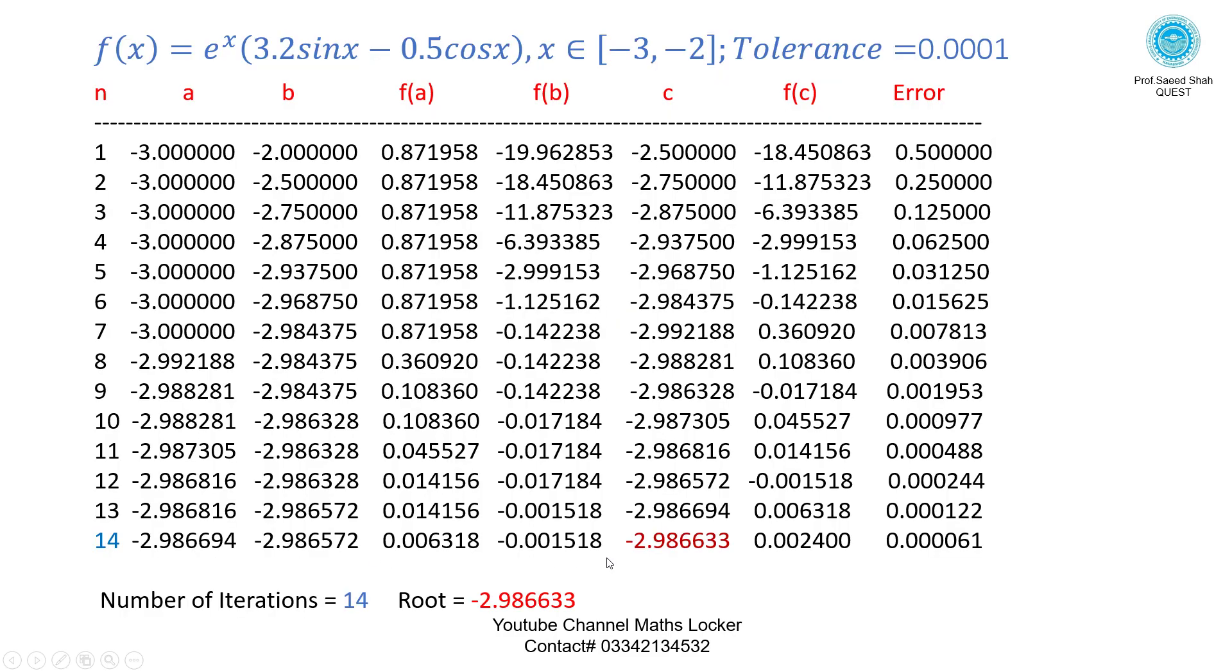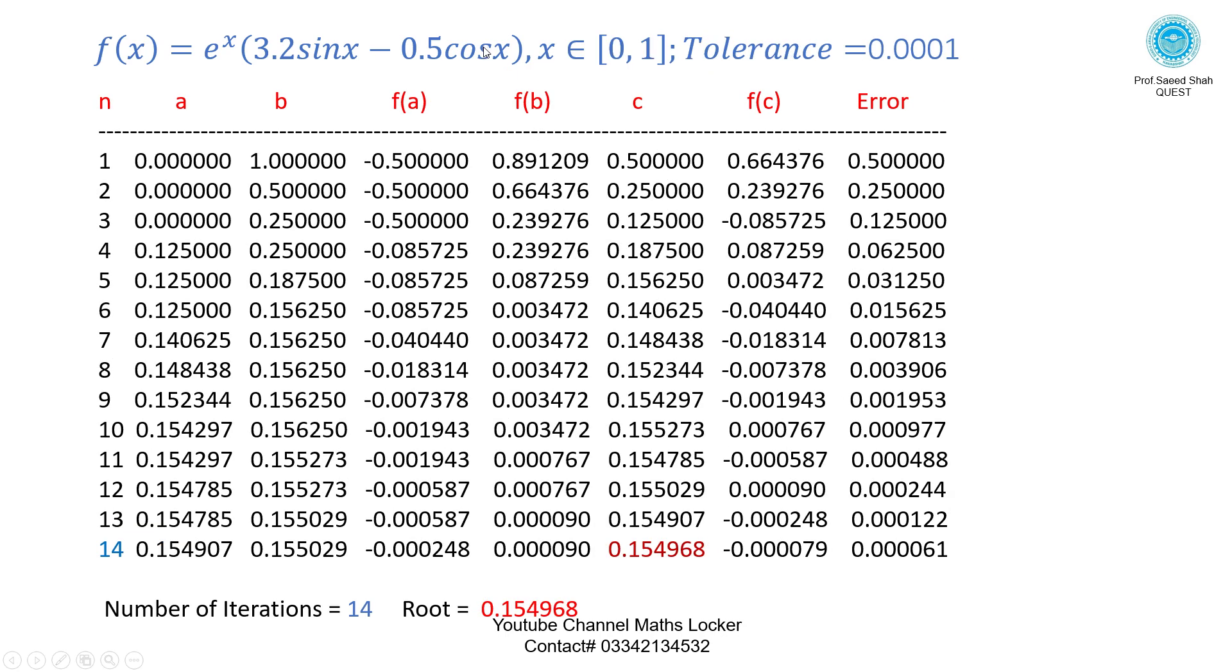The root between -3 and -2 after 14 iterations is -2.986633. The root in the interval 0 and 1 after 14 iterations is 0.154968.